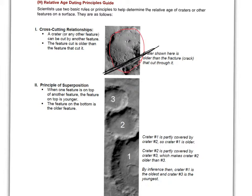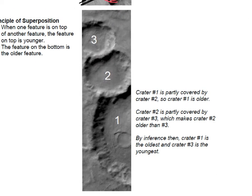Cross-cutting is very important for figuring out the sequence of events in any particular place you're looking at. Same thing with superposition. Here we've got three craters — one, two, and three. What order did they hit Mars in? Which is the oldest crater? Number one is the oldest crater. How do we know that crater one was an existing crater when crater two was produced? Because it's under crater two, and two is under three.